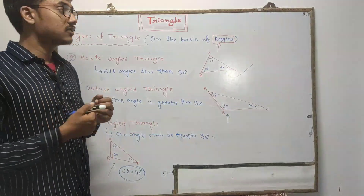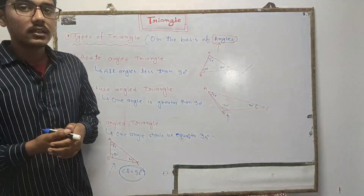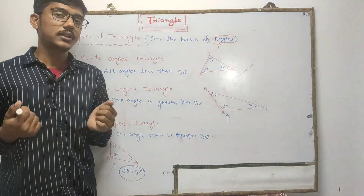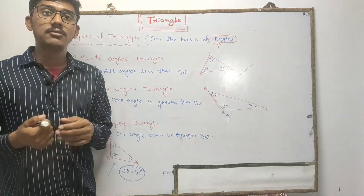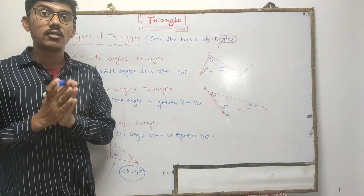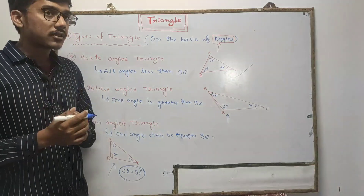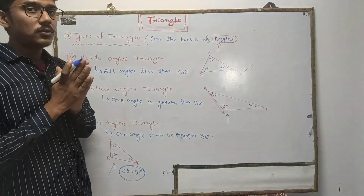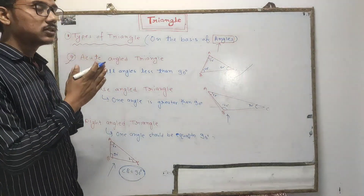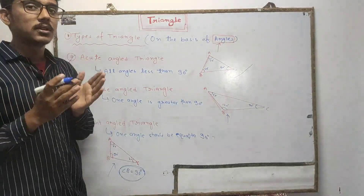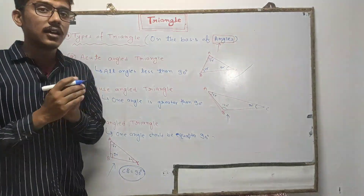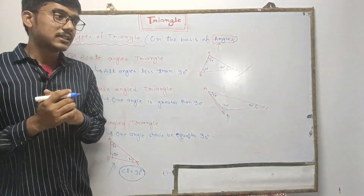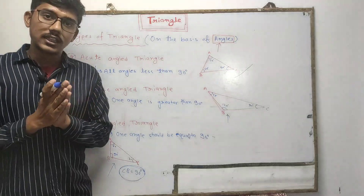So students, let's summarize today's class. We have studied about triangles — what is a triangle, what are the properties of triangles, and the types of triangles on the basis of sides and on the basis of angles. I hope you have learned something new and have more clarity about triangles. We will meet in the next class with an interesting topic. Thank you.